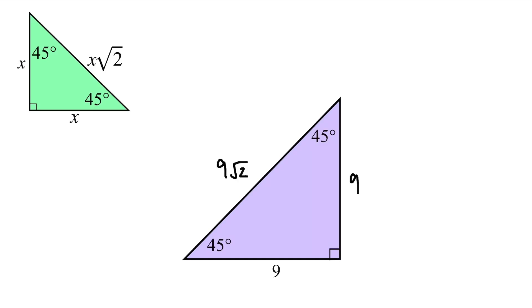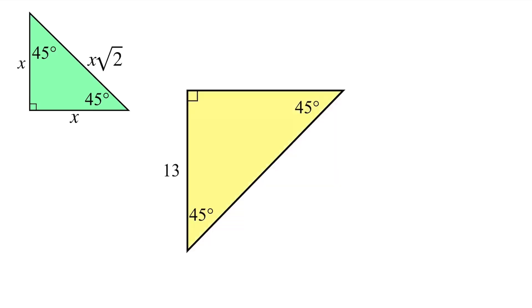Let's try one more example where we're given the leg. This time the leg is 13, so the other leg is also 13, and the hypotenuse is 13 root 2. Again, we're just following this pattern.